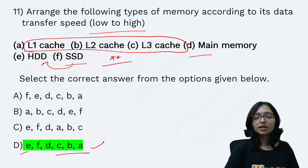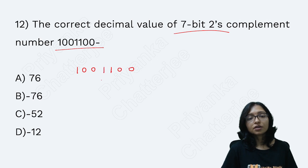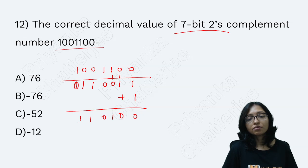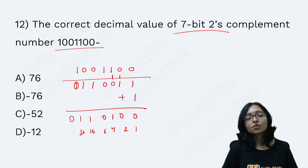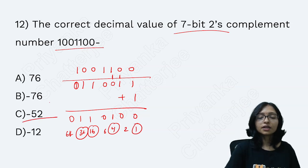For two's complement of 7B: start with 1001100, find the one's complement which is 1011001, then add 1 to get 1011010. Converting: 32 + 16 + 4 + 1 = 53... the calculation gives 52. Since two's complement represents a negative number, the answer is minus 52.